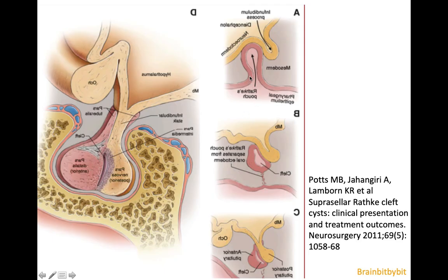These two layers of ectoderm interact, and this interaction leads to the induction of Rathke's pouch. There's upward movement and invagination of this ectoderm, while in the neuroectoderm there's posterior downward movement of the infundibular process. Rathke's pouch constricts at the end — this is the craniopharyngeal canal — and then you have Rathke's cyst, whose anterior end thickens and forms the anterior pituitary. Rathke's cleft is located posterior to the anterior pituitary and lined with epithelium from the ectoderm of the oral cavity.